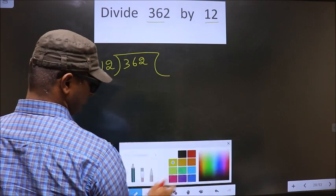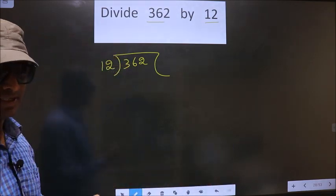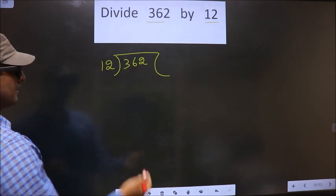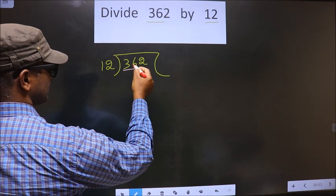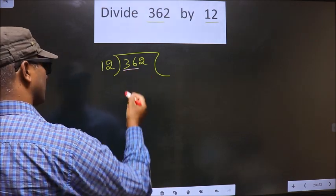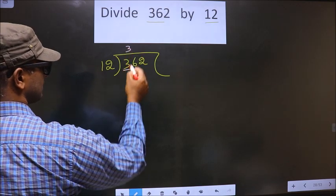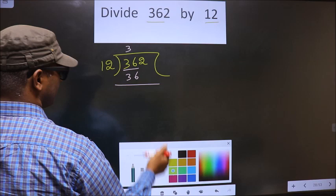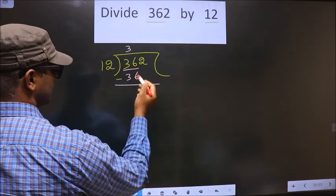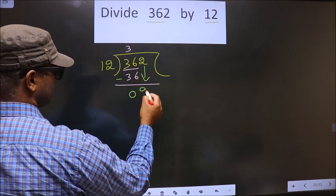Now here we have 3. 3 is smaller than 12, so we take two numbers, that is 36. When do we get 36 in the table of 12? 3 times 12 is 36. Now you should subtract: 36 minus 36 is 0. So now you bring the next number down, that is 2.